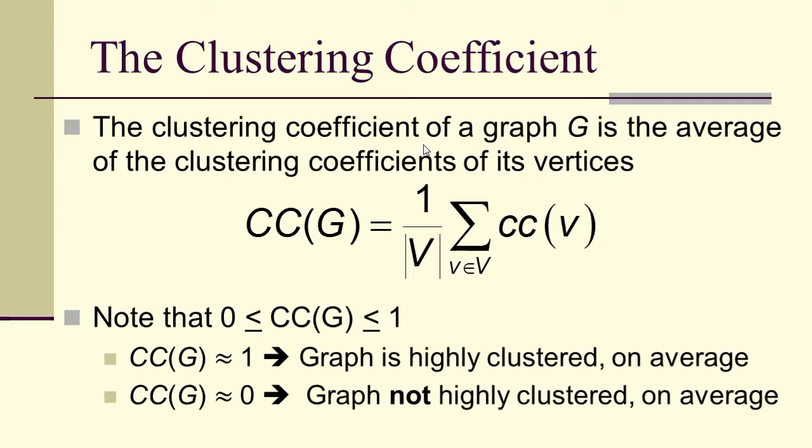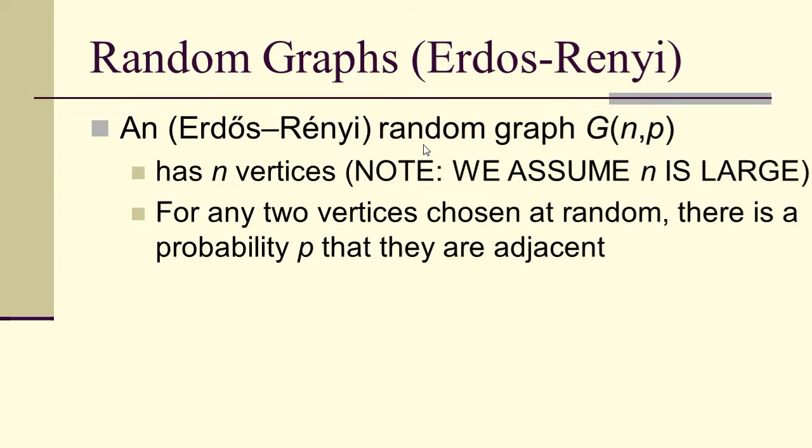Now we define the clustering coefficient of a graph to be the average of the clustering coefficients of its vertices. So capital CC of G must also be between 0 and 1. Clustering coefficient of a graph close to 1 means the graph is highly clustered on average. Clustering coefficient close to 0 means the graph is not highly clustered on average.